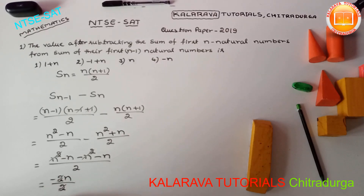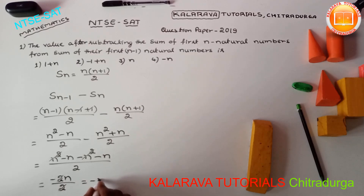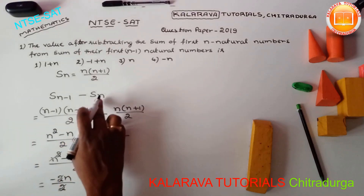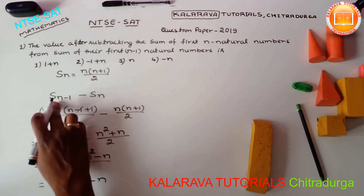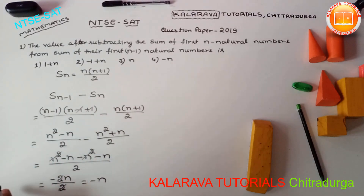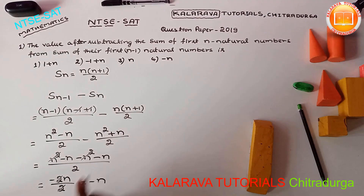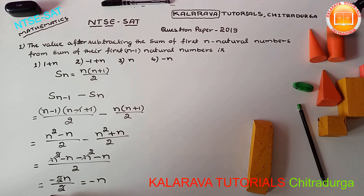The 2 cancels, giving the result minus N. So when we subtract the sum of N natural numbers from the sum of N minus 1 natural numbers, the answer is minus N — that is the fourth option.